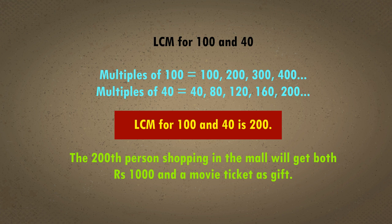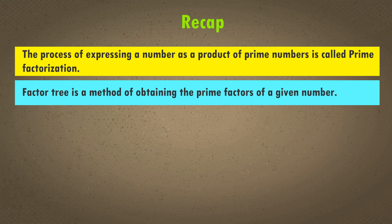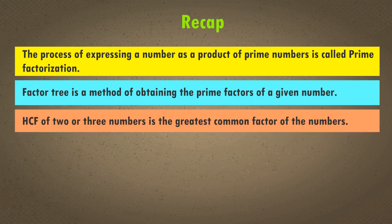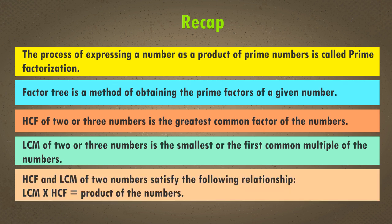Let us do a quick recap of all the important points learnt in this chapter. The process of expressing a number as a product of prime numbers is called prime factorization. Factor tree is a method of obtaining the prime factors of a given number. HCF of two or more numbers is the greatest common factor of the numbers. LCM of two or more numbers is the smallest or first common multiple of the numbers. HCF and LCM of two numbers satisfy the relationship: LCM × HCF = product of the numbers.